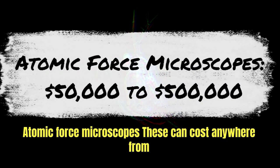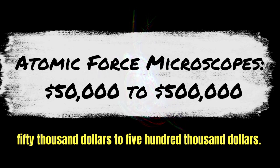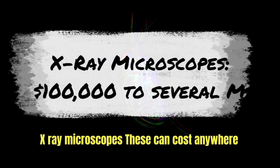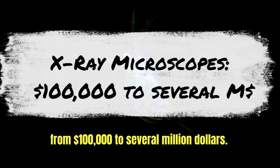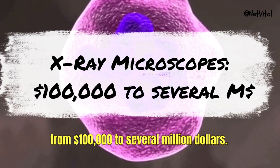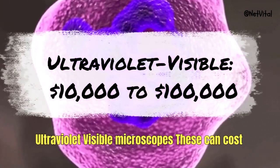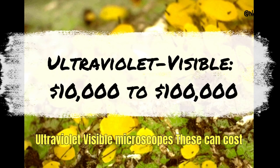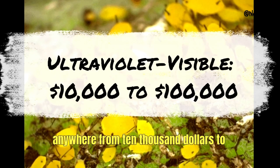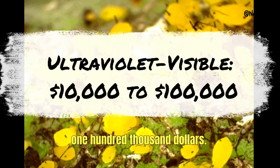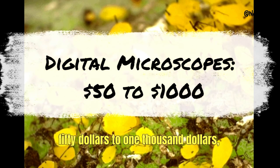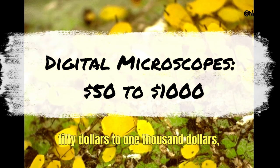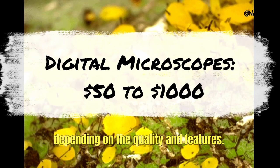Confocal microscopes can cost between $100,000 and $500,000 or more. Atomic force microscopes can cost anywhere from $50,000 to $500,000. X-ray microscopes can cost anywhere from $100,000 to several million dollars. Ultraviolet visible microscopes can cost anywhere from $10,000 to $100,000.